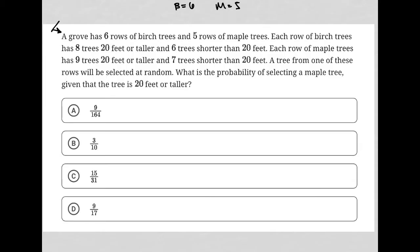So in a row, you have eight that are 20 feet or taller — I'll represent that as '20 plus' — and six that are shorter than 20, or '20 minus'. So that row has 14 trees basically, and there are six rows that look like that.